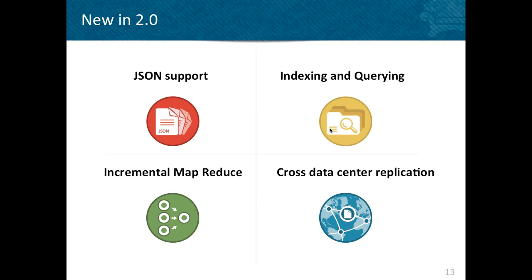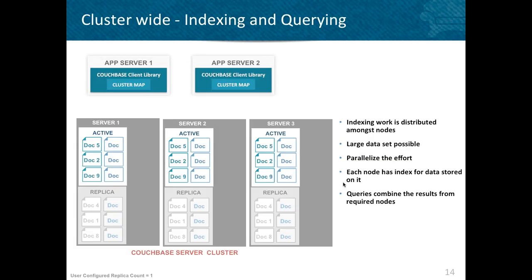Given that Couchbase Server is an operational data store, if you have a heavier analytical or batch workload, you would use another system like Hadoop on the side — just like in a traditional data warehouse setup. We have a Hadoop connector which allows you to move data back and forth between Hadoop and Couchbase. In addition, a big request from customers is cross data center replication, which allows you to seamlessly transfer replicated information from one entire cluster to another cluster, which may be in the same region, a different region, or completely different data centers.